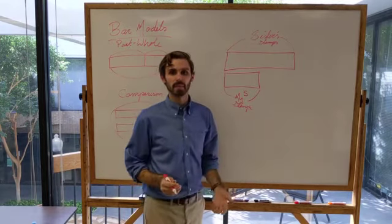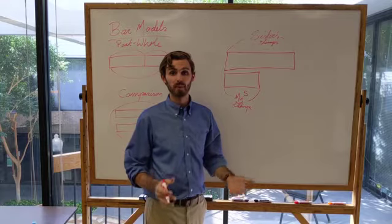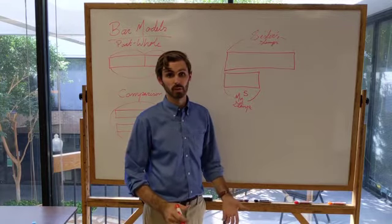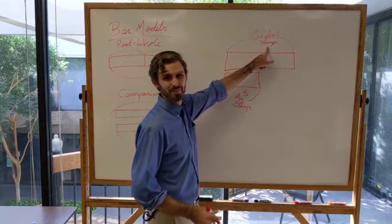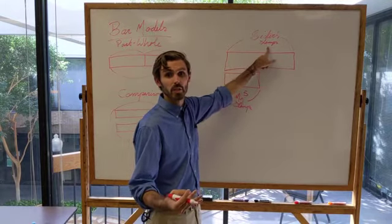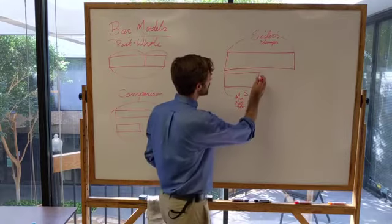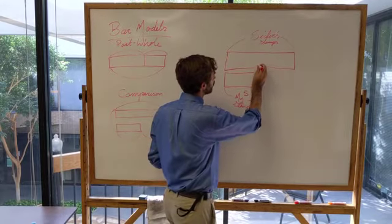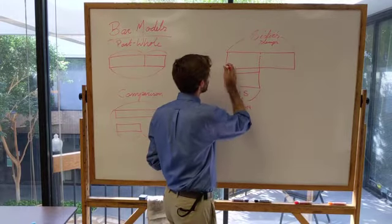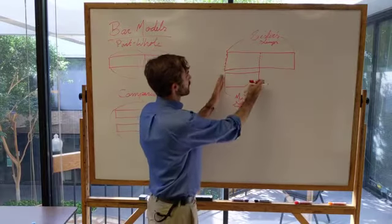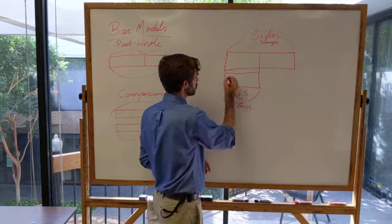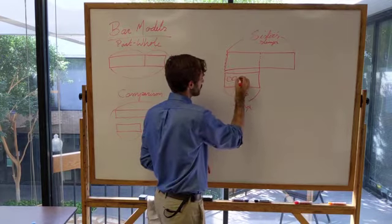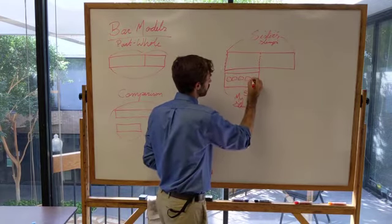Now the other thing I know is that my sister has four more stamps than I do. Well, I wouldn't put that there because my sister doesn't have four stamps. She has four more stamps than I do. You can see, if you imagine drawing a little dotted line up here, this is the number of stamps that my sister has that's the same number that I do. If we were to draw each of the little stamps in here, one, two, three, four, five...